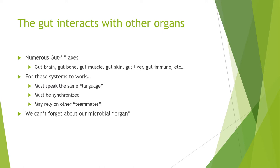First, they must speak the same language. In other words, there will be signaling molecules created in the gut that can go to the brain and attach to receptors, and vice versa — the brain creates signaling molecules that go to the gut. This happens throughout the entire body; some of these signals are conserved across all different tissues, while others are specific to gut-muscle or gut-brain signaling.